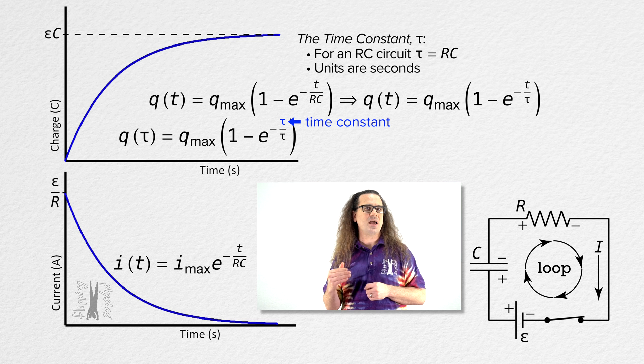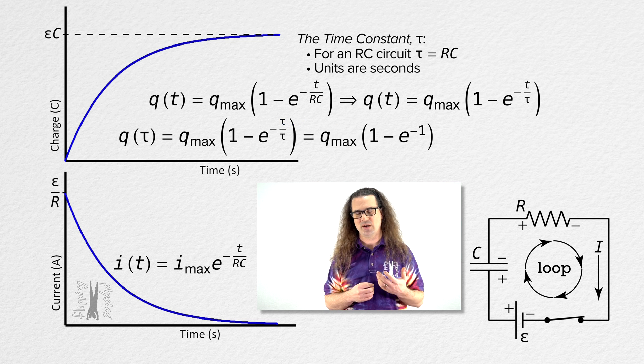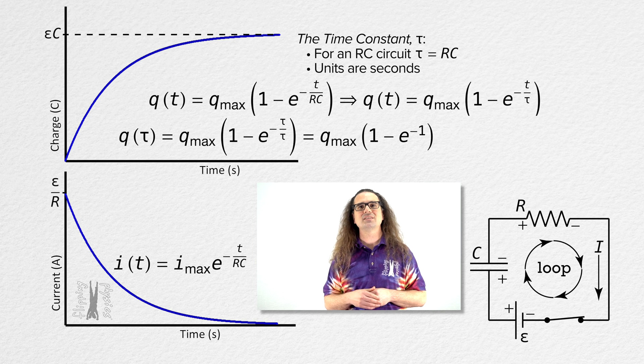We get e to the negative time constant over time constant, which is e to the power negative 1. Class, what does e raised to the power negative 1 equal?